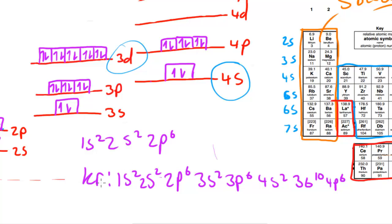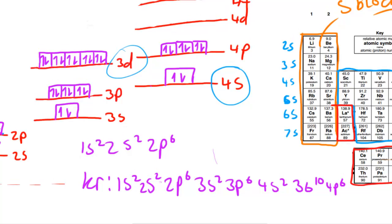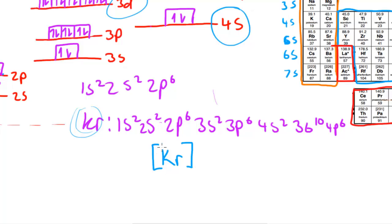Sometimes we use a shortcut to make this much simpler: we use the noble gases. We simplify the formula by putting the noble gas in square brackets. Since Krypton is itself a noble gas, we can simplify it to just [Kr]. You can see how much quicker that is compared to writing out the full notation.